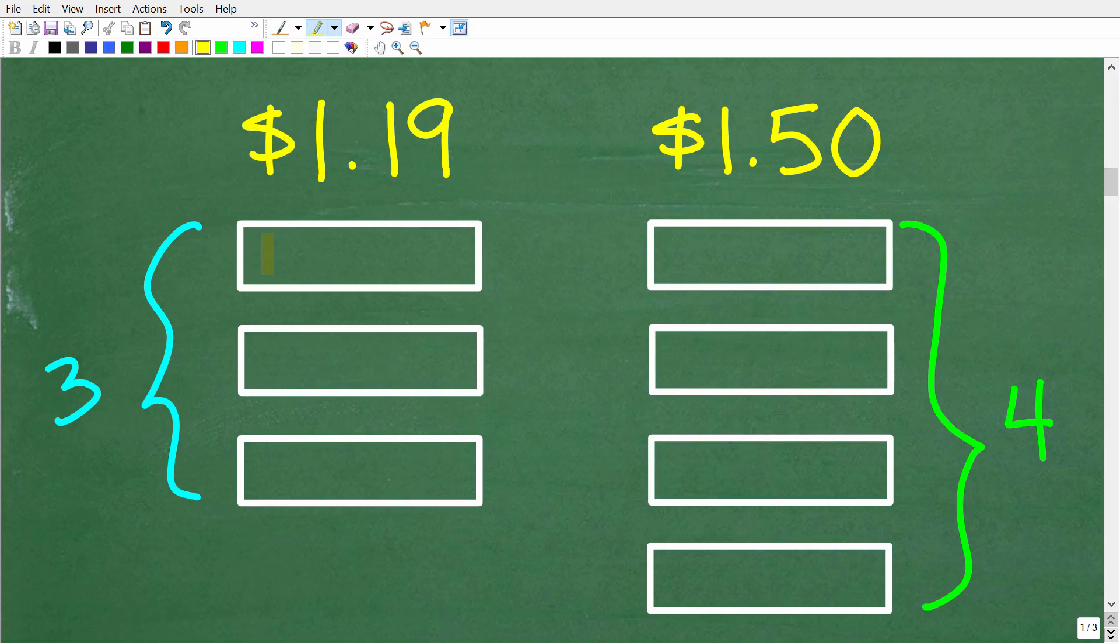So we have two offers here, but we need to think about the individual cost of these protein bars. And over here, for $1.19, or these three protein bars for $1.19...